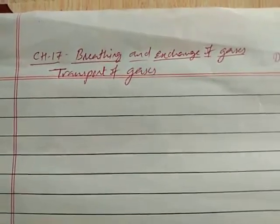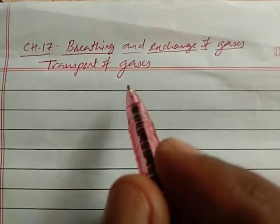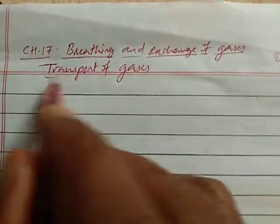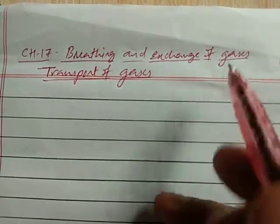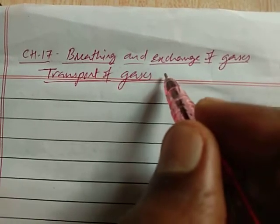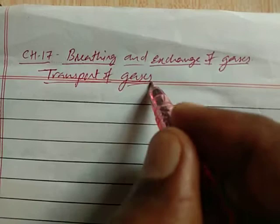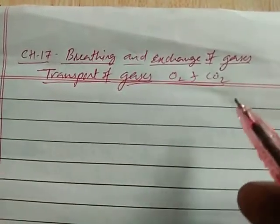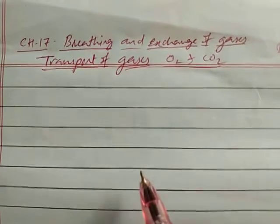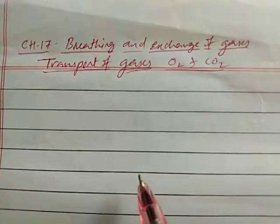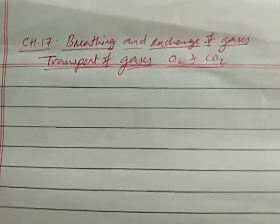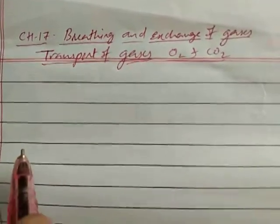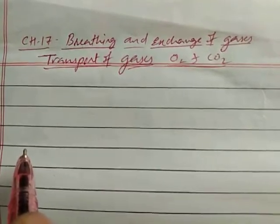In this video we'll discuss the next topic: transport of gases, from the chapter 'Breathing and Exchange of Gases.' Gases here means O2 and CO2 — how they are transported from one place to another, where oxygen is supplied and carbon dioxide is eliminated.